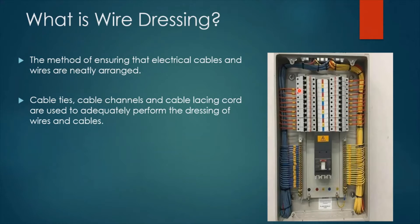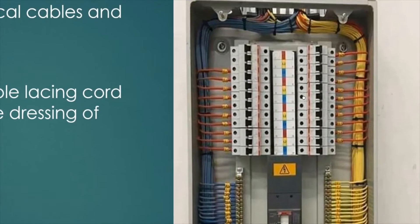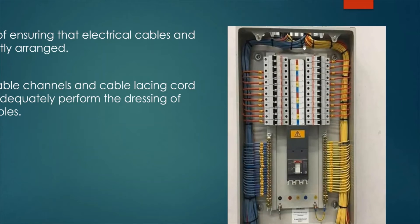Now let's look at what is meant by dressing, or wire dressing. It is the method of ensuring the electrical cables and wires are neatly arranged inside the distribution board enclosure. In order to do the dressing in a proper way, cable ties, cable channels, and cable lacing cord are used. As we can see in this picture, the wires are neatly arranged inside the enclosure and also neatly terminated inside the circuit breakers of this DB.